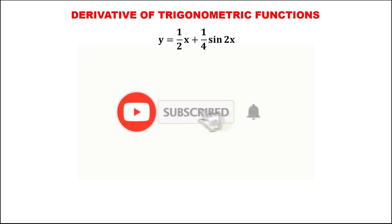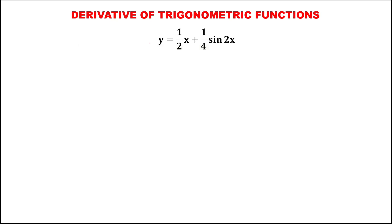For this problem, to find the derivative of trigonometric functions, for this given: y equals one-half x plus one-fourth sine two x. To find the derivative, y prime equals the derivative of one-half x, which is one-half, then plus the derivative of one-fourth sine two x. Write this constant, so we have one-fourth, then times the derivative of sine two x.